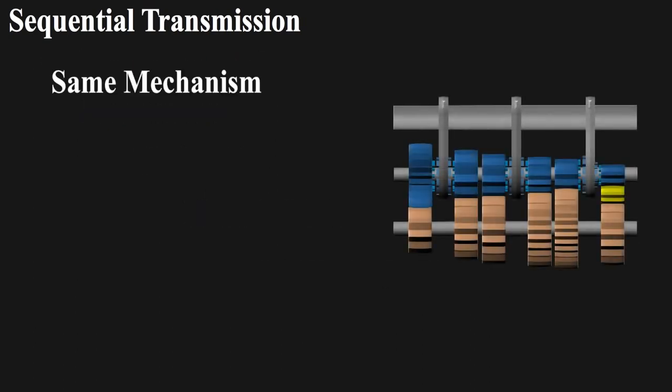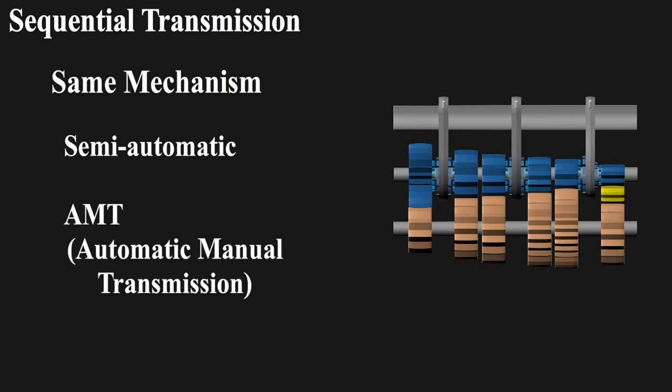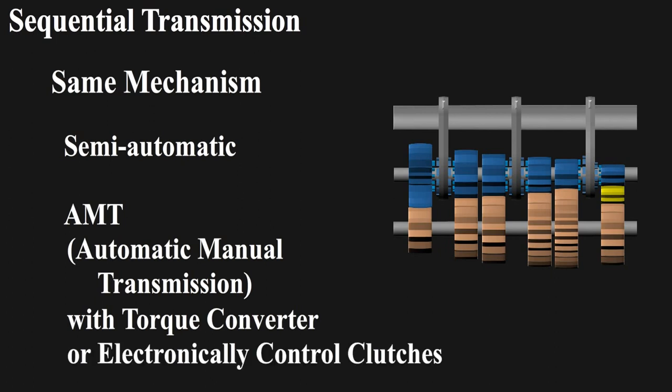You can find this in most F1 cars. This is the same mechanism used in semi-automatic and AMTs, which are automatic manual transmissions, with either a torque converter or electronically controlled clutches.